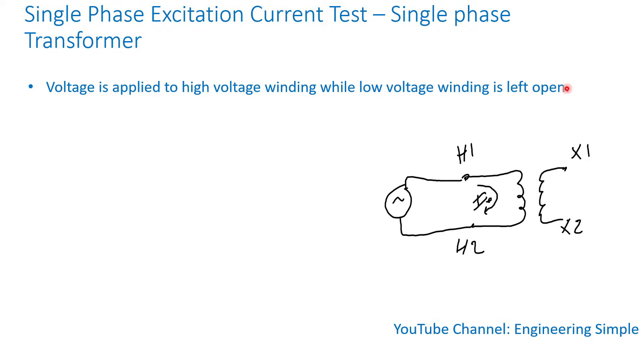So now let's look at single phase excitation current test for single phase transformers. The voltage is applied to the high side winding while the low voltage winding is left open. So it depends on the size of the transformers. For transformers above 12 kV, typically 10 kV excitation is applied.